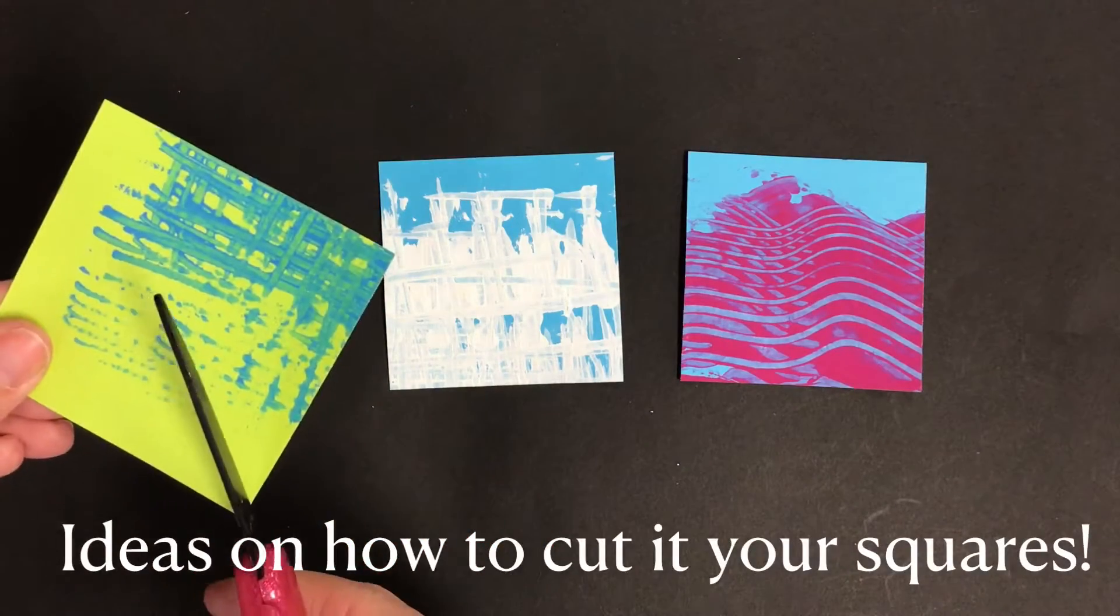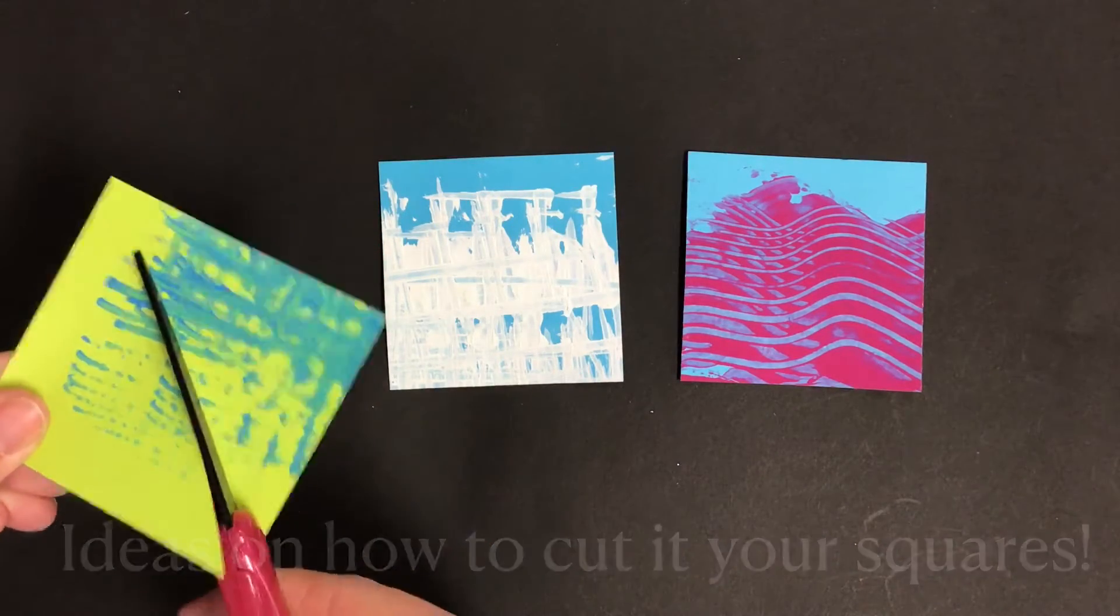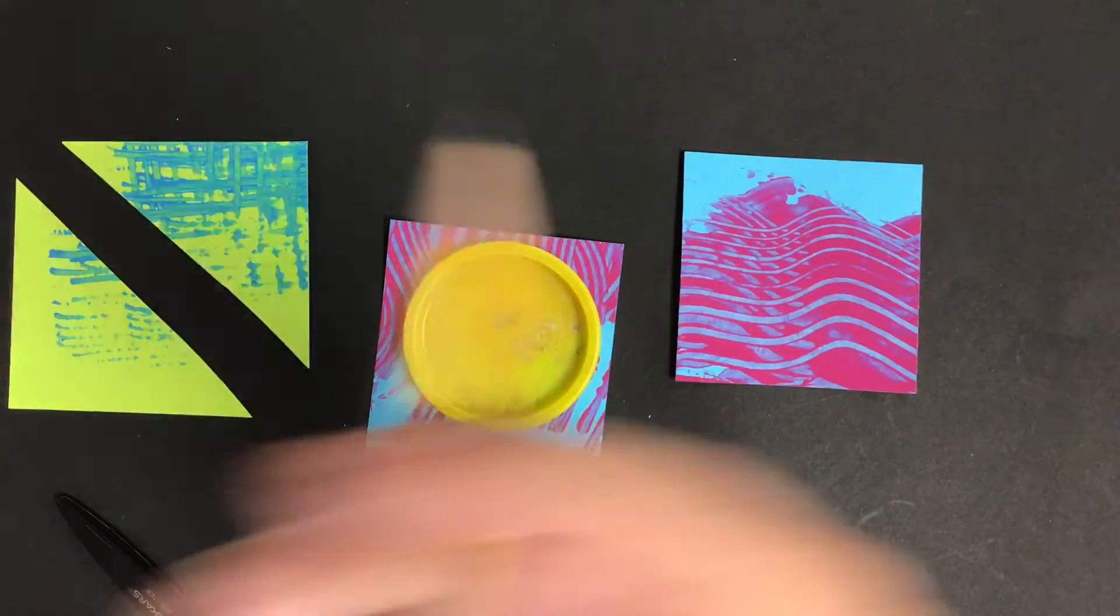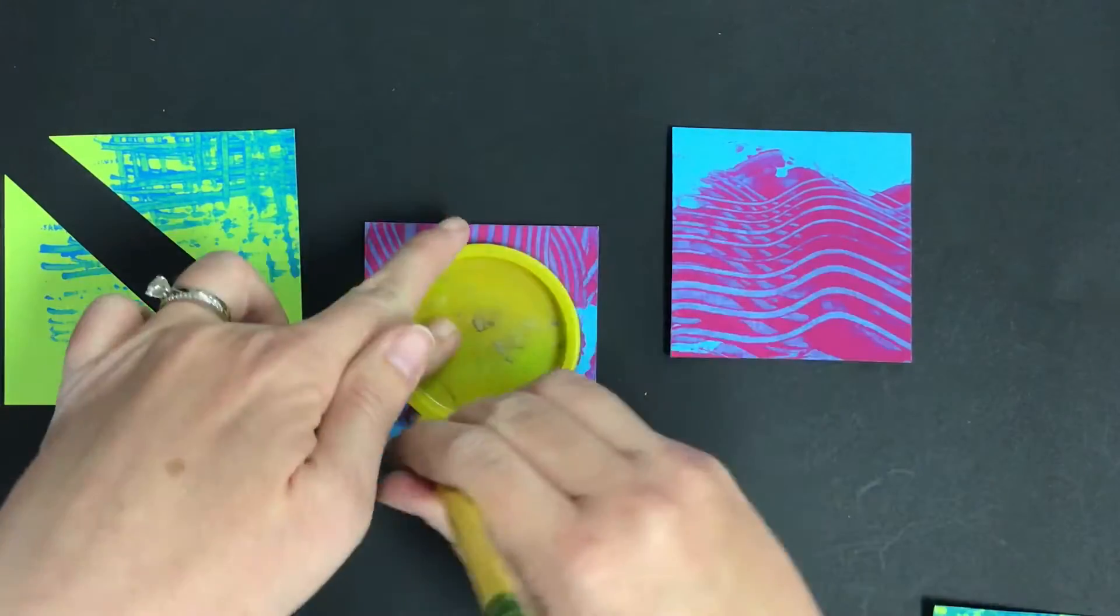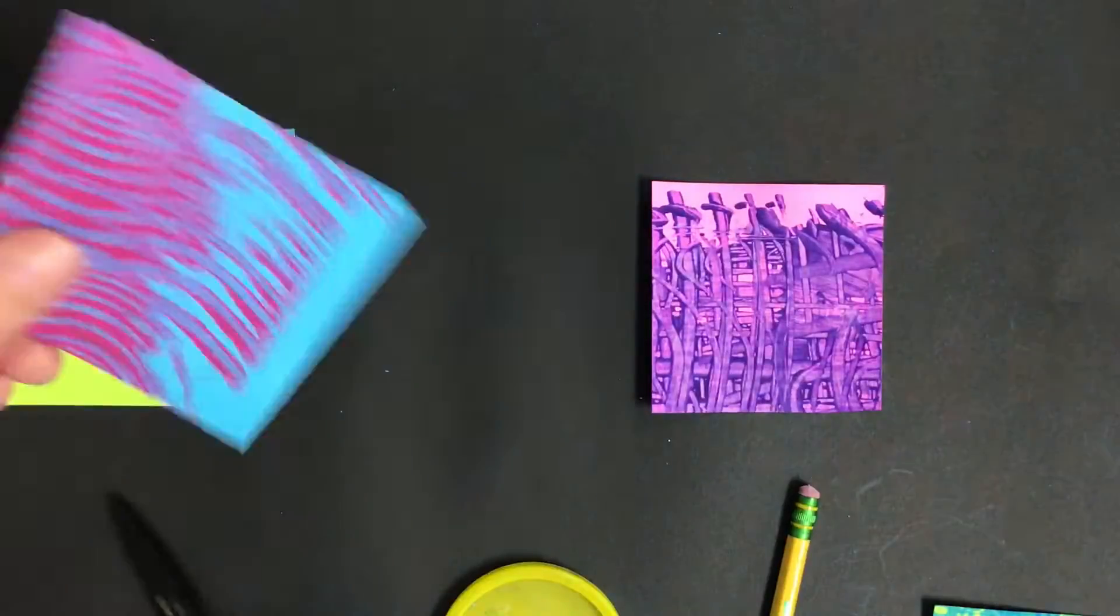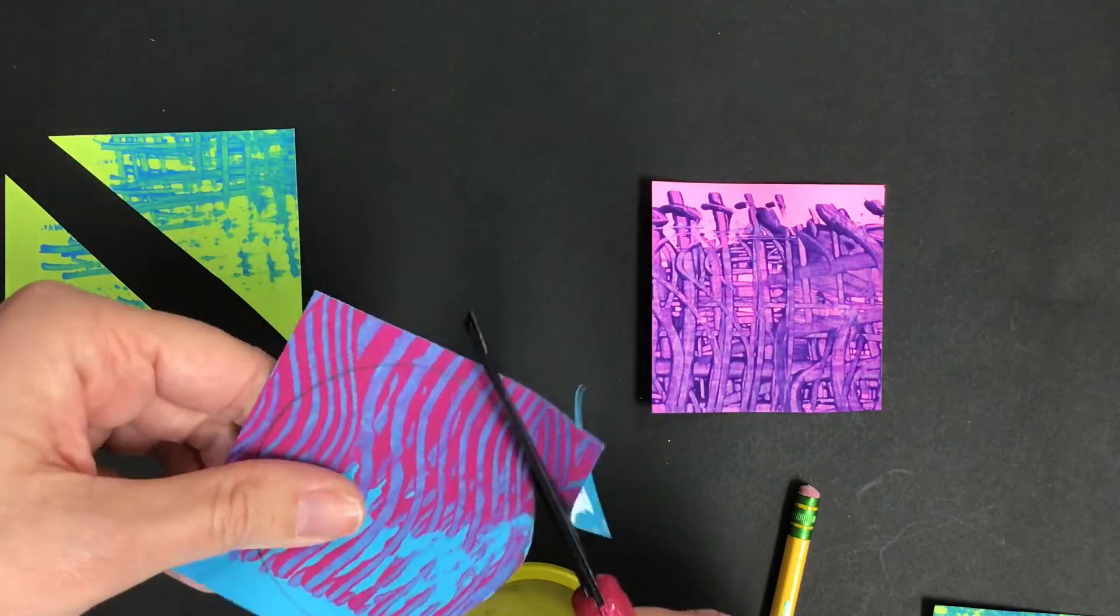Here's some ideas on how to cut your squares. You could use your scissors and cut the square in half to create two triangles. You could use a circle tracer to create a circle and cut it out. Remember not to throw any of the paper away because we could use that scrap paper for smaller details later.